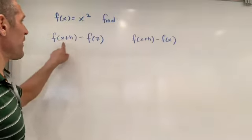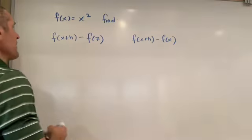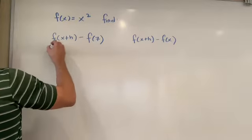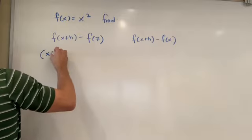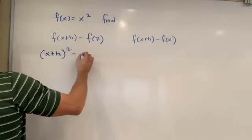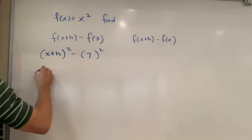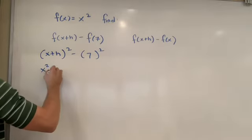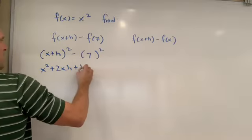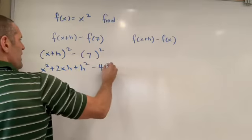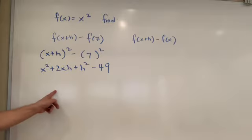Mathematically, if I say f of x is x squared, find f of x plus h minus f of 7. Just as we did before, f of x plus h is x plus h squared minus, if our input is 7, we're squaring that. So, when we foil this out, we get x squared plus 2xh plus h squared minus 49. That will be our first answer here.